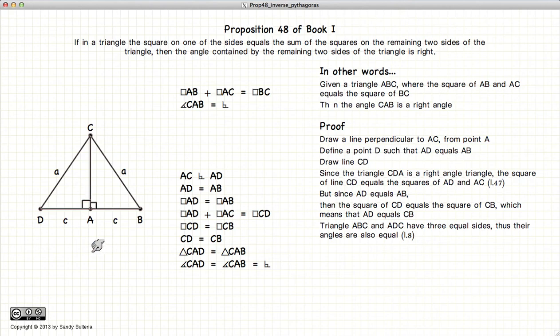And if we have two triangles with a side, side, side equal, they are equal in all respects, including the angles, which means that this angle here, ACAB, is equal to CAD, which they are both right angles.